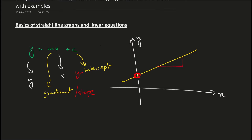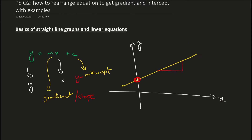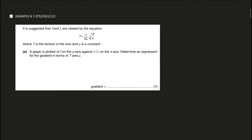Gradient also has another name — you can call it the slope, which describes how steep the graph is. Gradient can be positive or negative depending on the type of graph. For example, this blue line has a negative gradient. Now let's look at the first example from the past paper and see how to solve it.